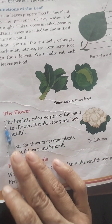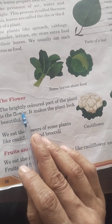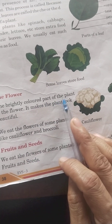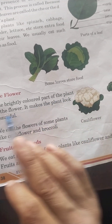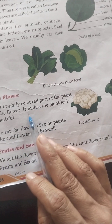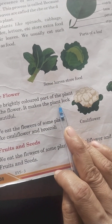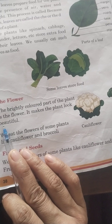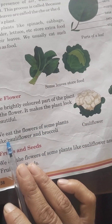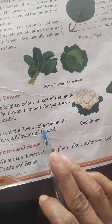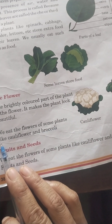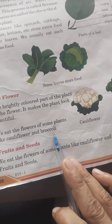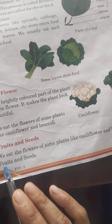The flower: the brightly colored part of the plant is the flower. It makes the plant look beautiful. We eat the flowers of some plants like cauliflower and broccoli.